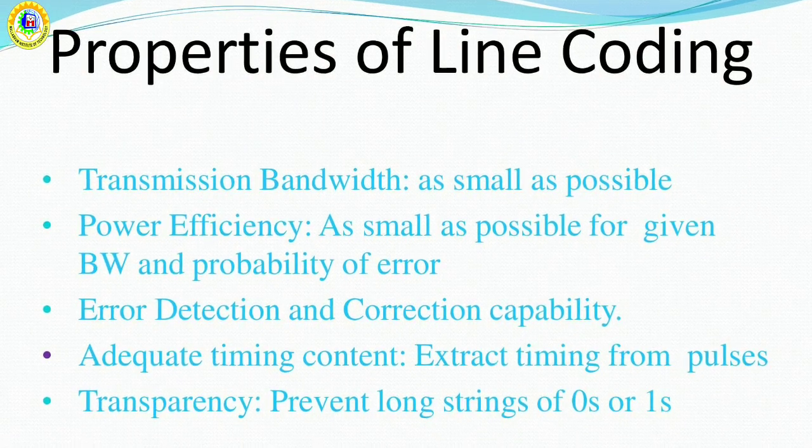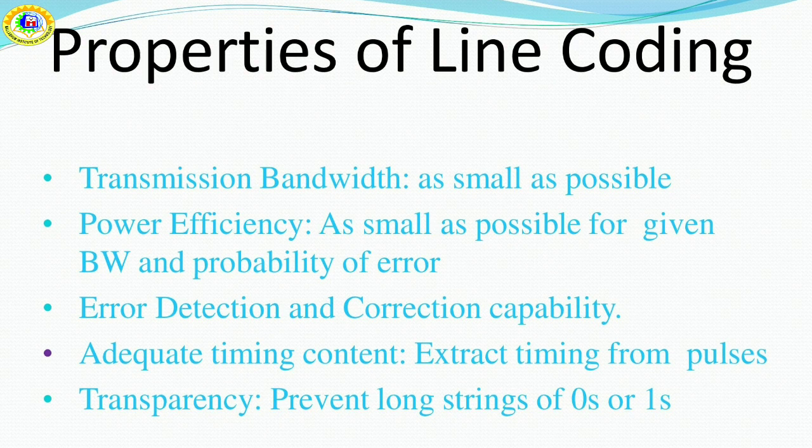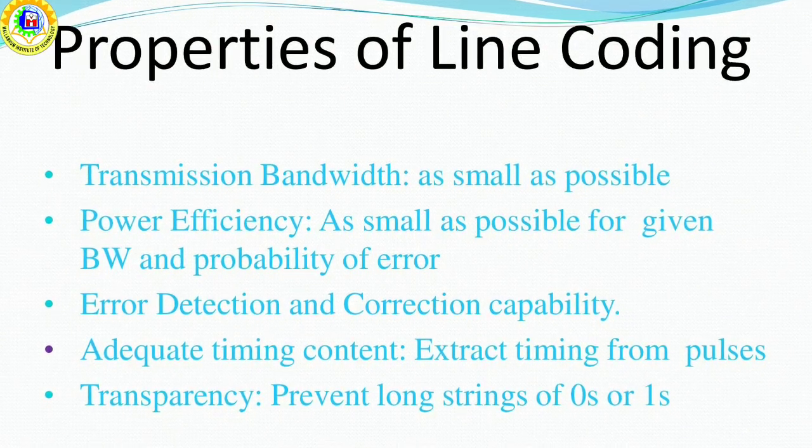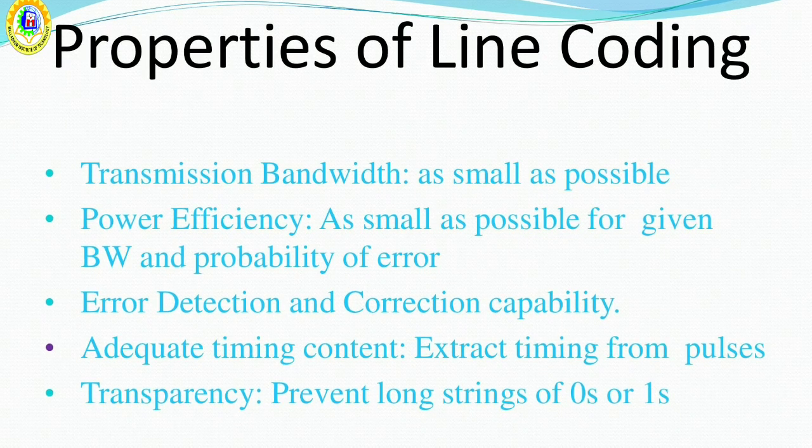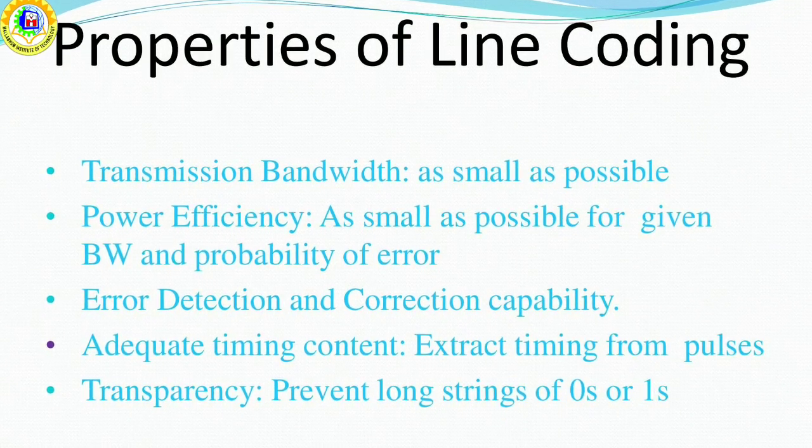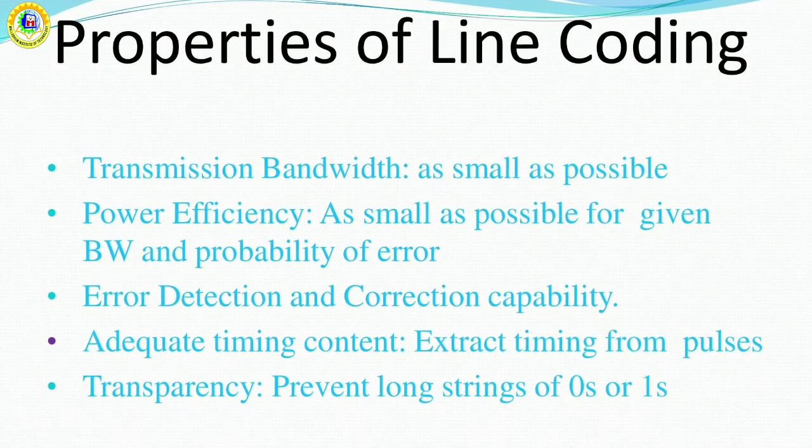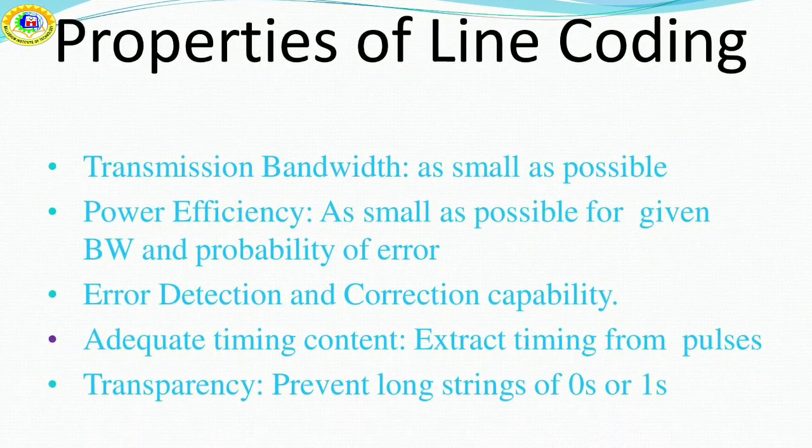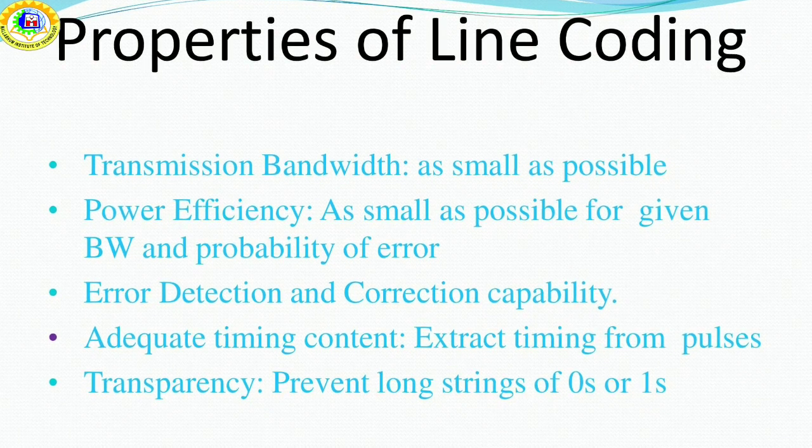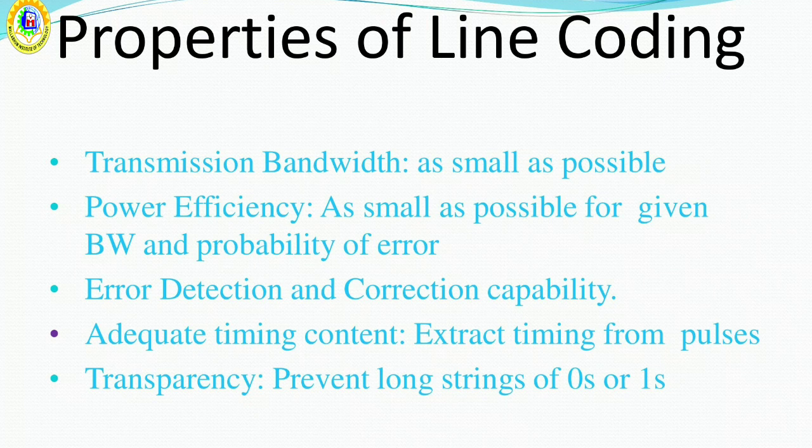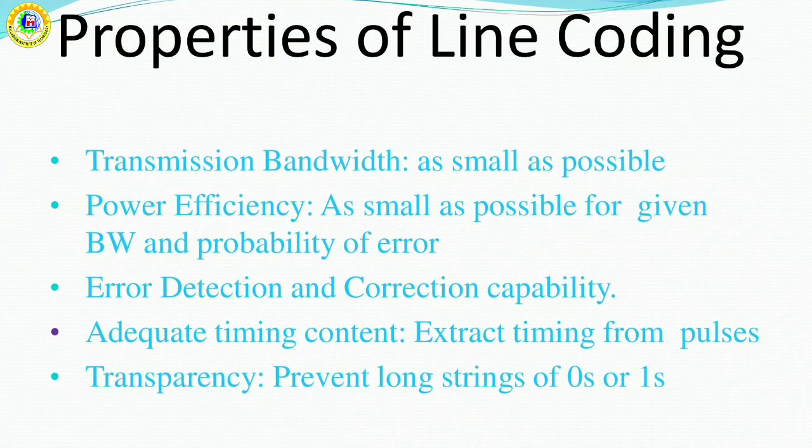Error detection and correction capability: It must be possible to detect and preferably correct detection errors. Adequate timing content: It must be possible to extract timing or clock information from the signal. Transparency: It must be possible to transmit a digital signal correctly regardless of the pattern of ones and zeros.